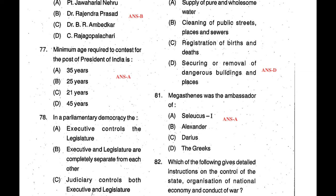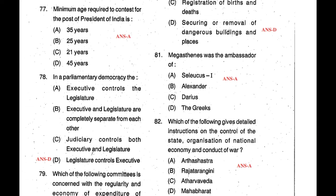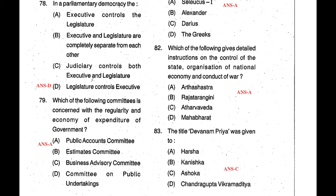Question 81: Megasthenes was the ambassador of Seleucus I. Megasthenes is a Greek ambassador who came from Seleucus I, a Greek ruler, to Chandragupta — you may have seen the serial Chandragupta. Question 82: Which of the following gives detailed instruction on the control of the state, organization of national economy, and conduct of war? The correct answer is Arthashastra — Arthashastra tells about state organization, national economy, and conduct of war.